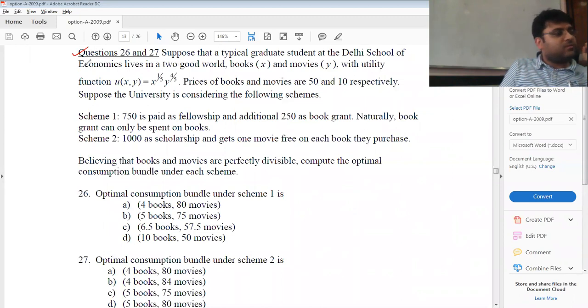DSC 2009, questions 26 and 27. A typical student at the Dewey School of Economics has a utility function where X is books and Y is movies.